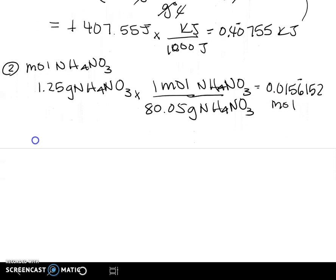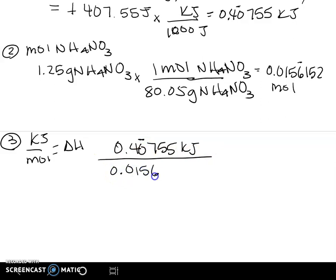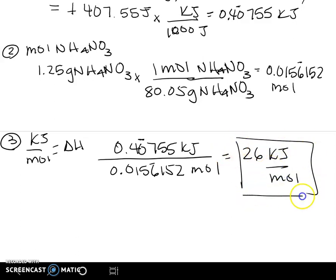That's step two. And now step three, we're just going to divide the two, because we want kilojoule per mole. That is our delta H. So we're going to take our 0.40755 kilojoules, again that has the two sig figs, divided by our 0.0156152 moles. That has three. So our answer has to have two sig figs. We get 26 kilojoules per mole for our delta H.